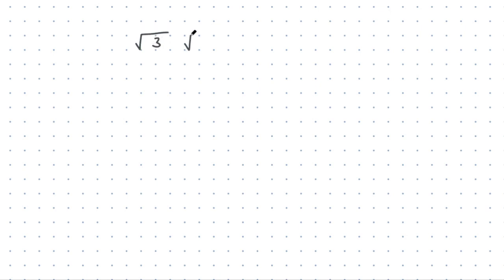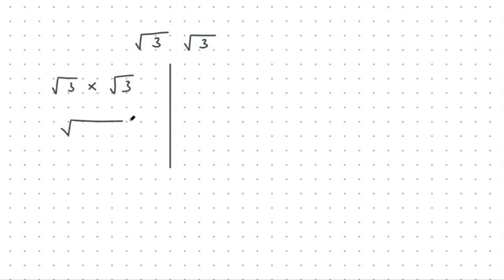For example, the square root of 3 multiplied by the square root of 3. We've seen two different ways to think about that. We can think of it as root 3 by root 3, and they can both be written underneath the square root — the square root of 3 by 3, which is the square root of 9. And we know the square root of 9 is 3.